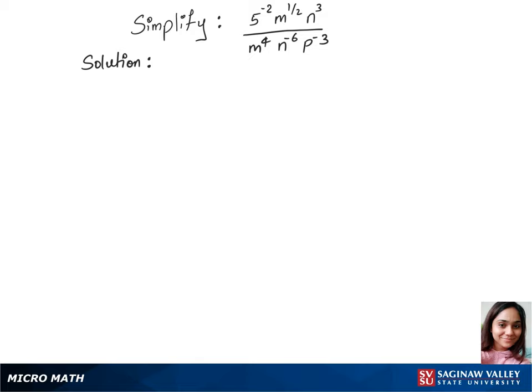To simplify this question, we will use a few exponent rules. For the first one, 5 power minus 2, we will use the second rule that gives us 1 over 25. We have M on top and bottom, so let's use the first rule. Let's put the base M to the power 1/2 minus 4, and same case with N - let's put the power as 3 minus (-6).